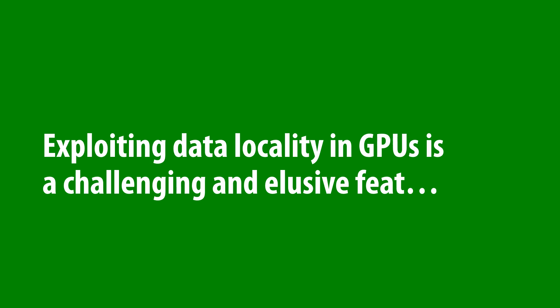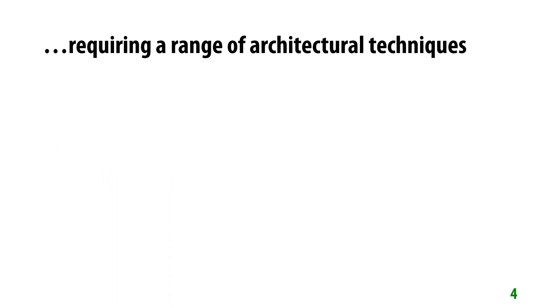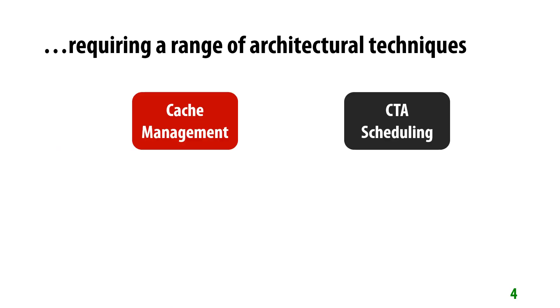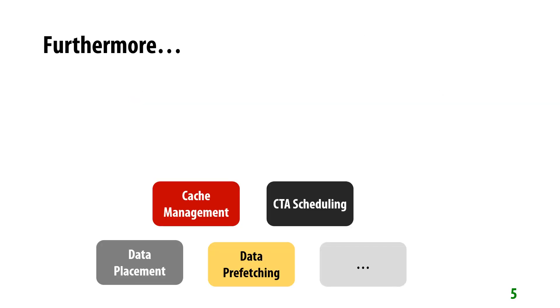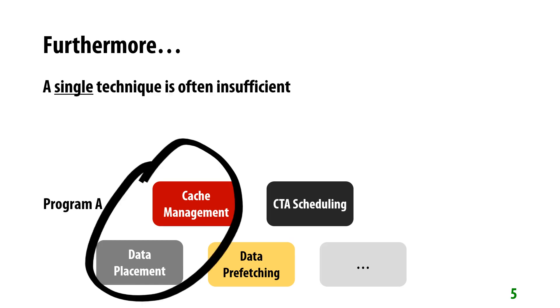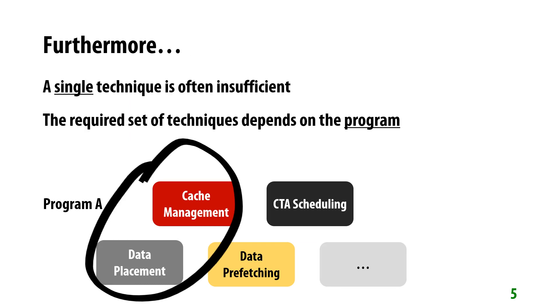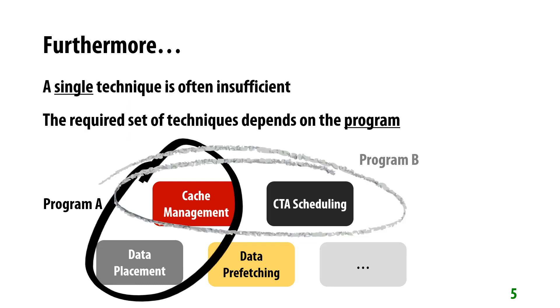Today, however, leveraging either form of locality is an extremely challenging and elusive feat that requires a range of architectural techniques, such as cache management, CTA scheduling, data placement, data prefetching, and many other techniques. Furthermore, a single technique is often insufficient. We need multiple techniques to effectively leverage data locality, and the set of techniques we need varies depending on the program itself.